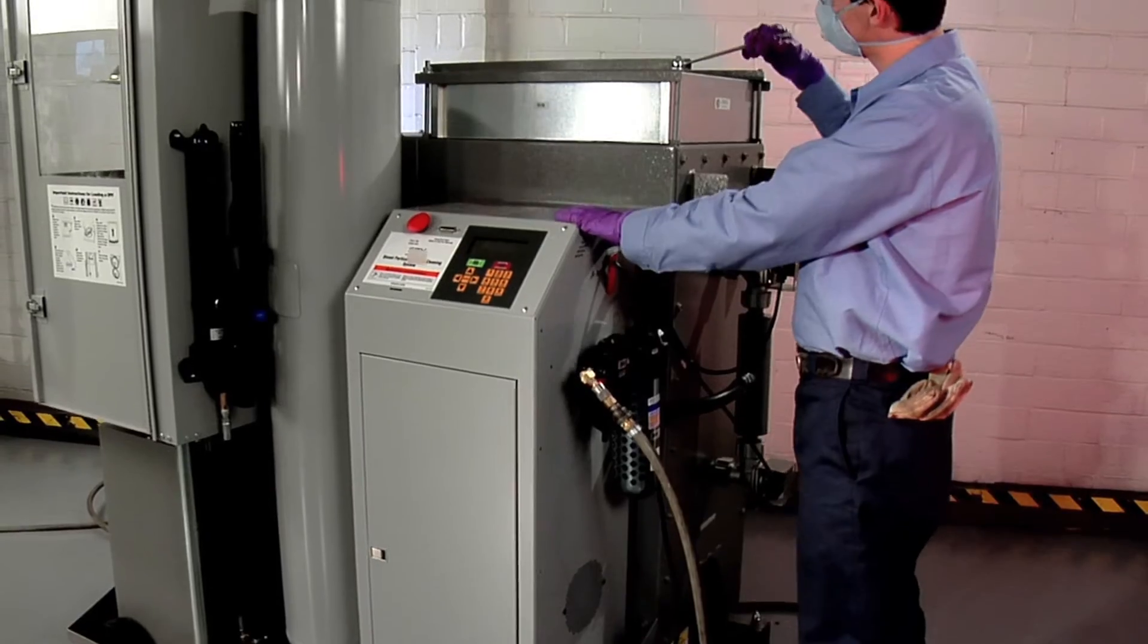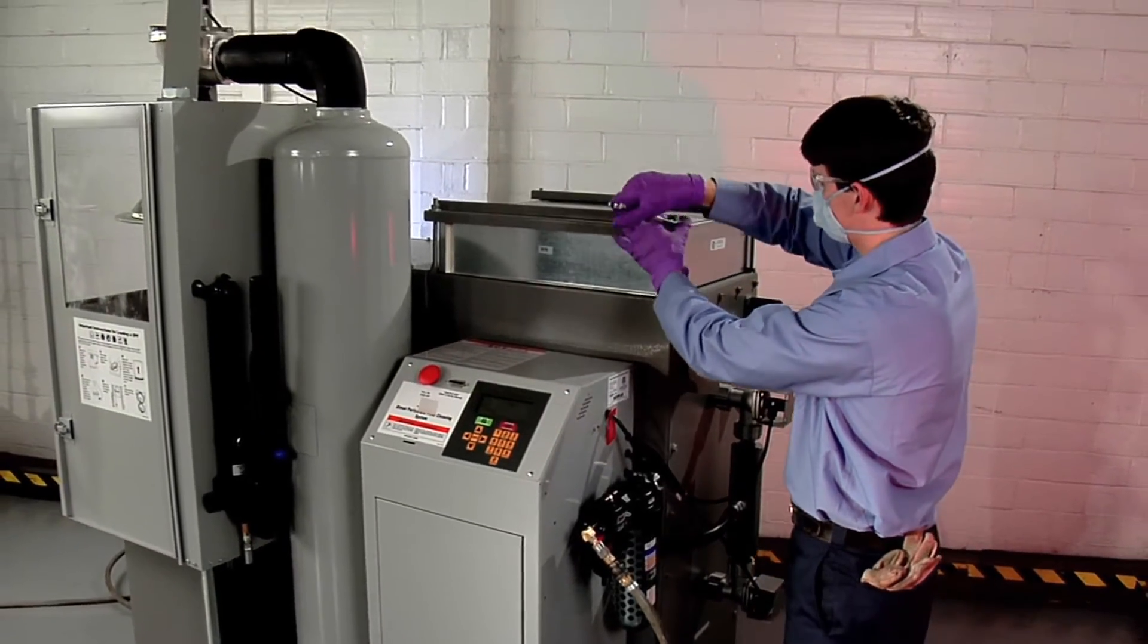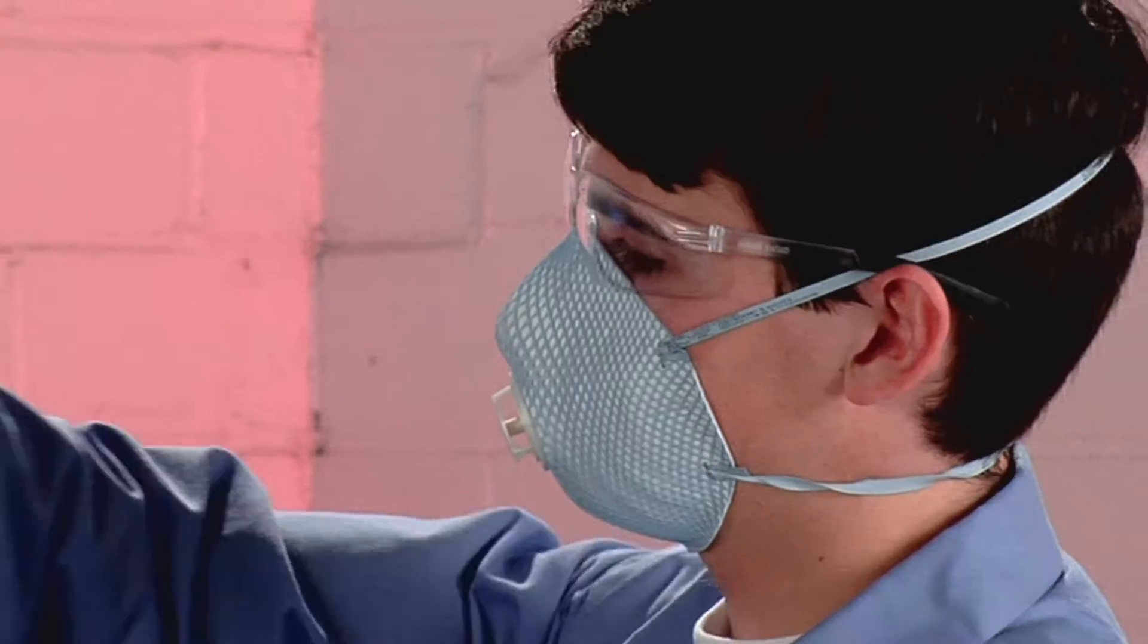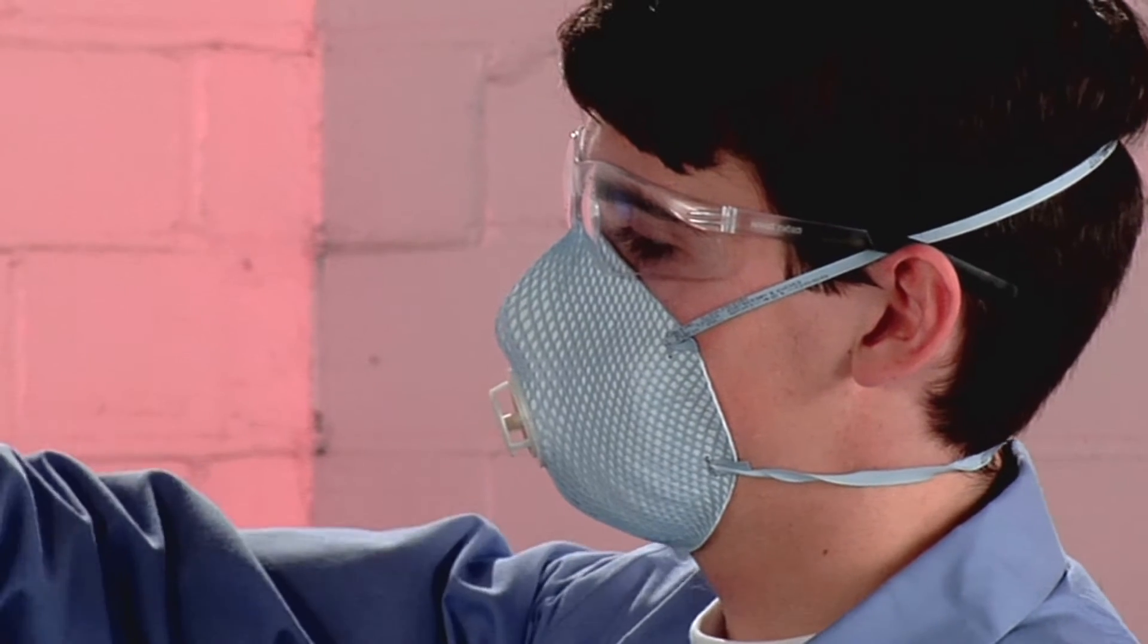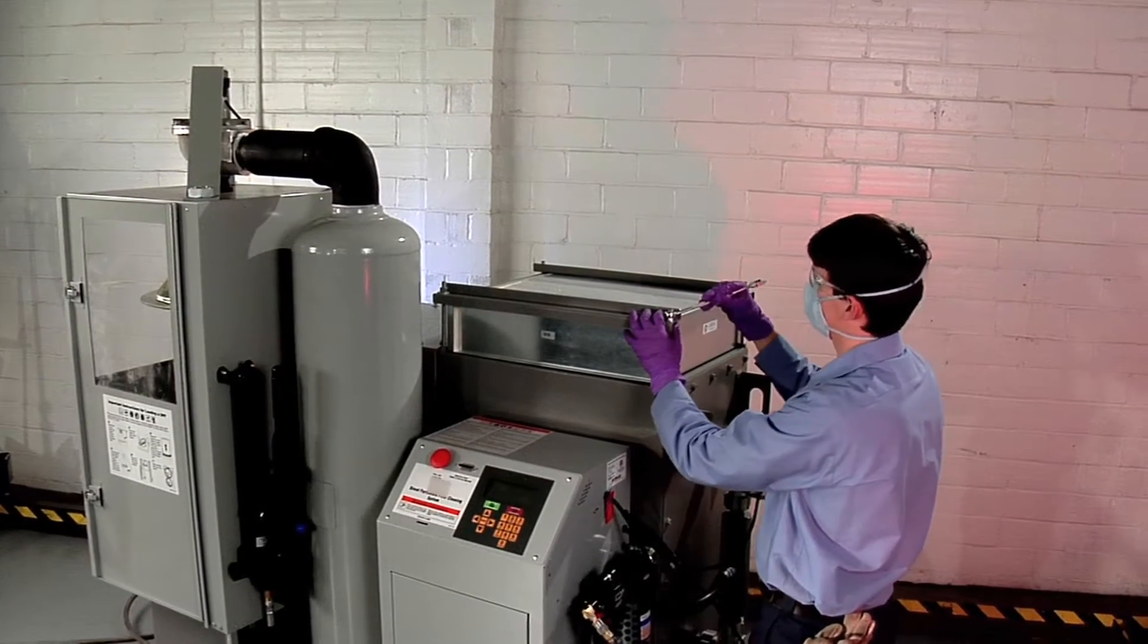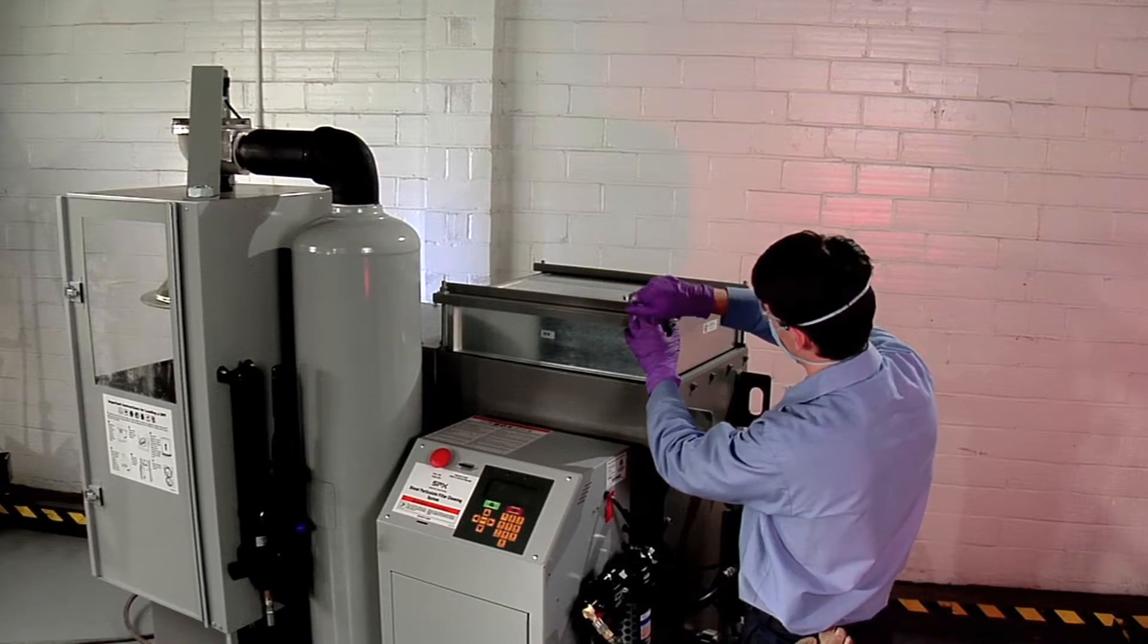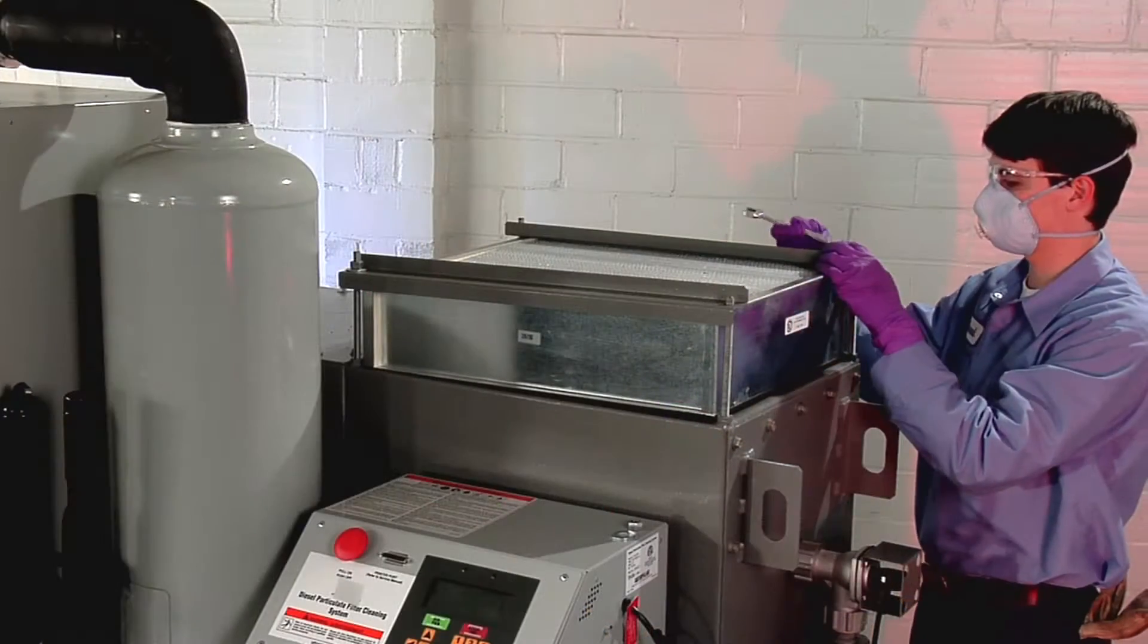The HEPA filter should be inspected annually. To inspect the filter, it must be removed from the machine and the bottom of the filter needs to be visually inspected. The filter should be replaced if it has become dirty and restricts air flow.